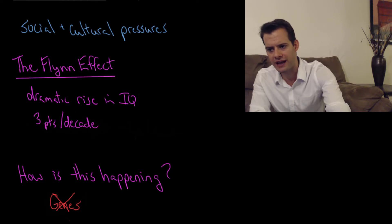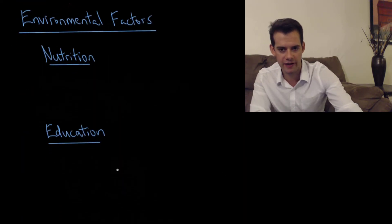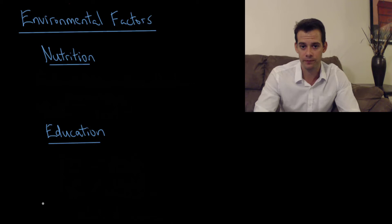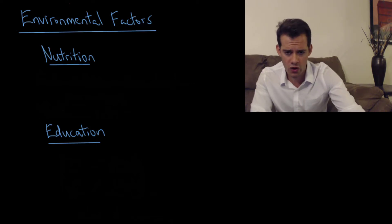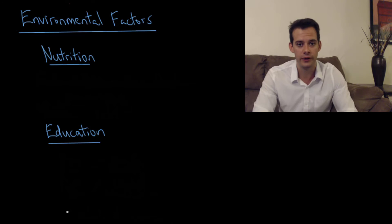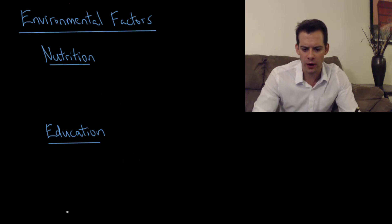So if we rule out genetic factors then we're left with some environmental factors. Now we'll consider what these environmental factors might be that could explain this dramatic rise in IQ. The first of these is nutrition. We can consider that as nutrition improves in certain areas we also see that the average IQ score tends to go up. Now this is not about an individual basis, we're talking about the overall population. I'm not saying that if you eat a salad and take some vitamins that your IQ is going to go up.